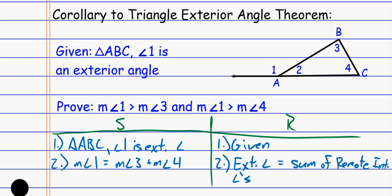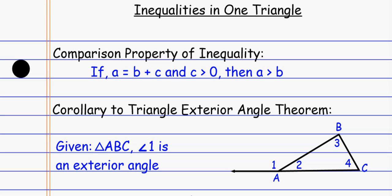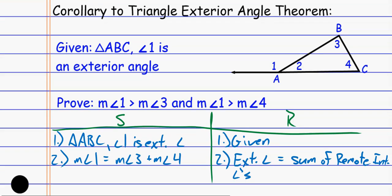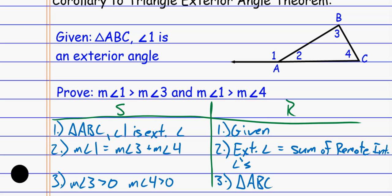If we're talking about the comparison property, all we need to show is that the thing being added is bigger than zero. I can say that the measure of angle three has to be greater than zero, and the measure of angle four has to be greater than zero. I can say that because this thing's a triangle — if they're not greater than zero, then the triangle doesn't exist. So that's because triangle ABC exists.